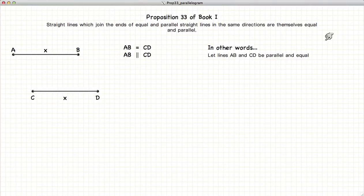This video presentation is going to be on Proposition 33 of Book 1, which states that if we have two parallel lines of equal length, and we draw another two lines connecting the endpoints, then these two lines will also be parallel and of equal length.